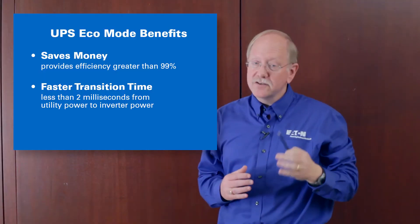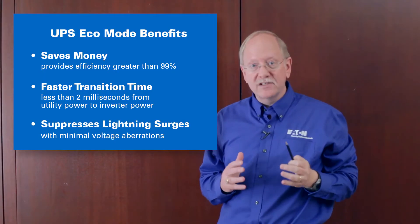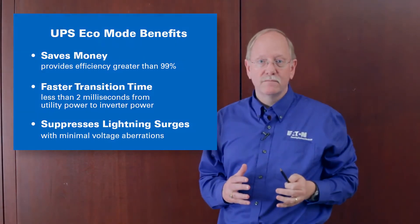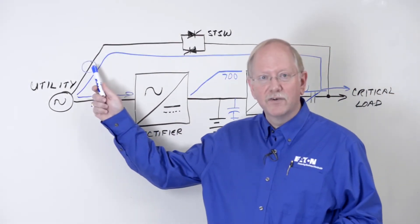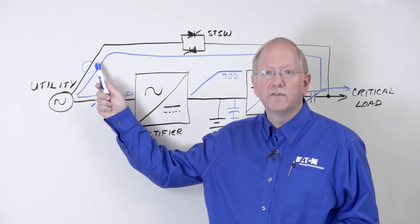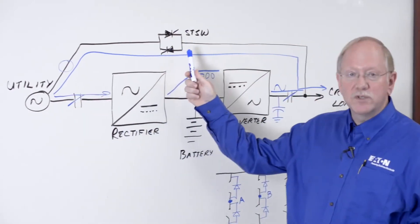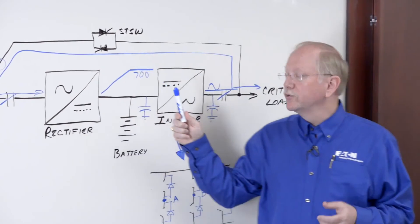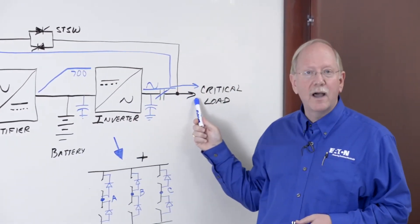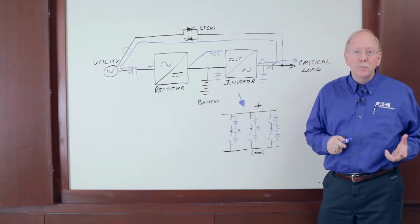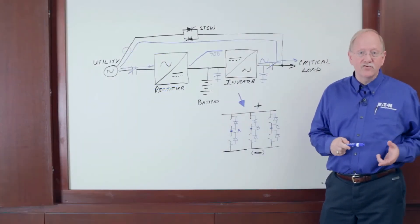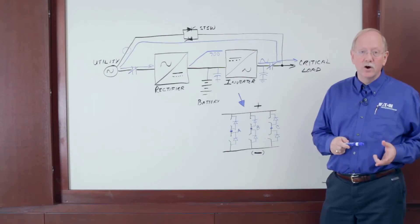So what the graphic shows is even when we impress a 6,500 volt spike right on the input terminals of the UPS, and even though the static switch is closed in Eco mode, we're able to attenuate that surge at the final output shown by the green sine wave to only a few volts. So in fact, the UPS is able to suppress lightning strike style surges, even in Eco mode.